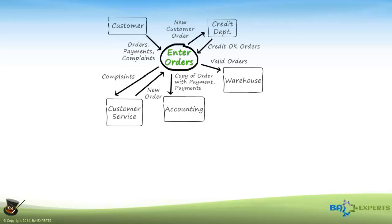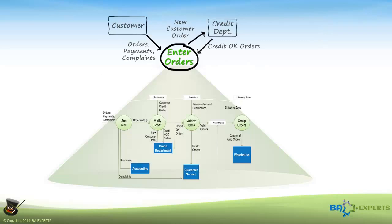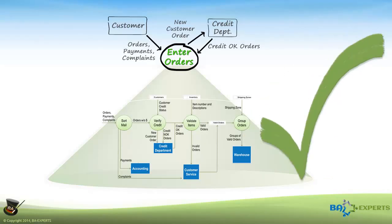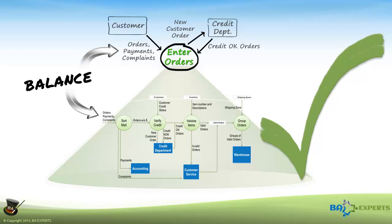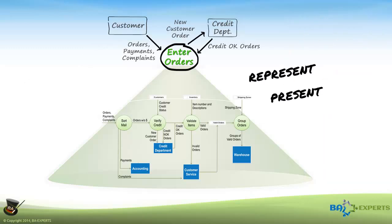Given that you've created a context data flow diagram, or context DFD, and exploded one or more processes down to a lower level of detail, you're not really done yet. If you're going to rely on the diagram being accurate and complete, you would be well advised to balance the process on the context diagram with the lower level diagram. This simple step is one of the best reasons for creating and using DFDs to represent, present, and analyze how a process works.